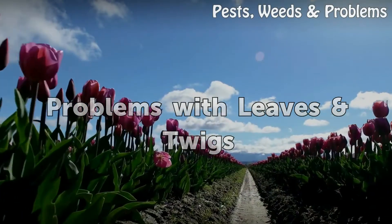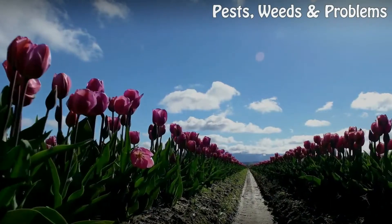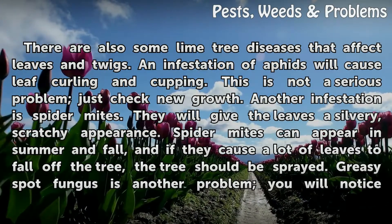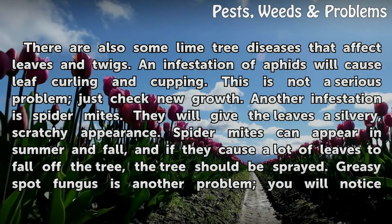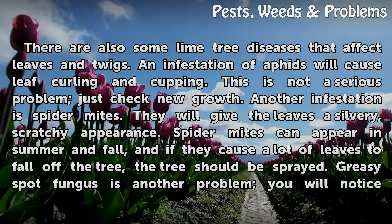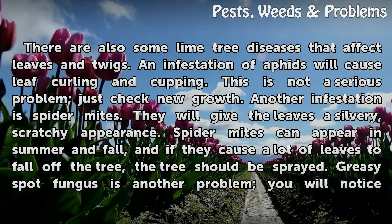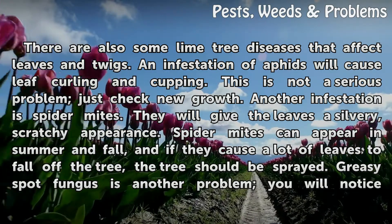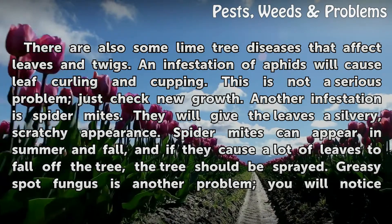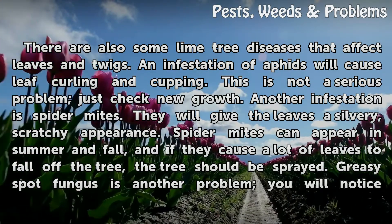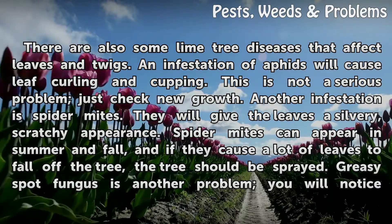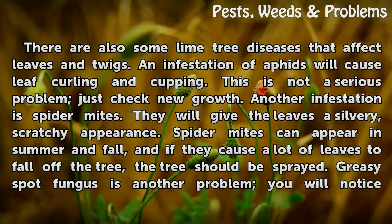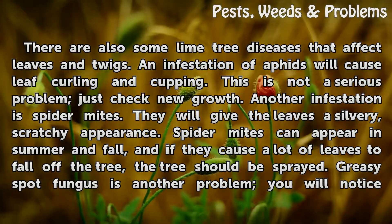Problems with Leaves and Twigs. There are also some lime tree diseases that affect leaves and twigs. An infestation of aphids will cause leaf curling and cupping. This is not a serious problem — just check new growth. Another infestation is spider mites. They will give the leaves a silvery, scratchy appearance. Spider mites can appear in summer and fall, and if they cause a lot of leaves to fall off the tree, the tree should be sprayed.